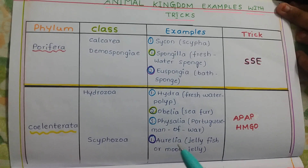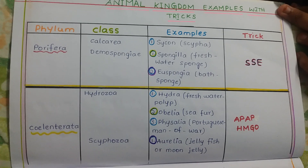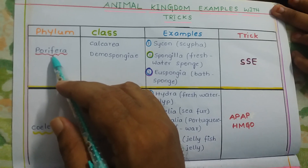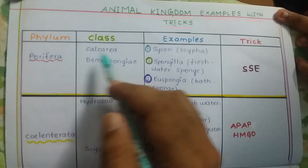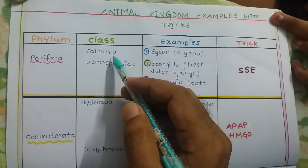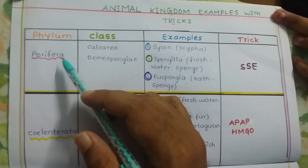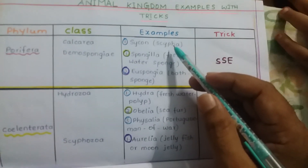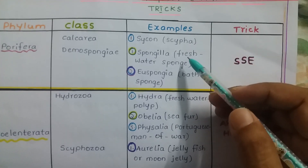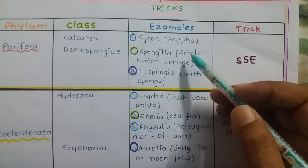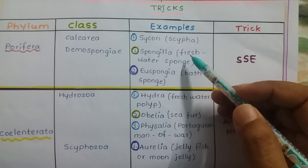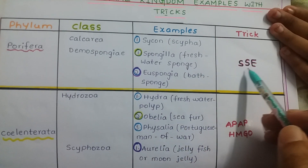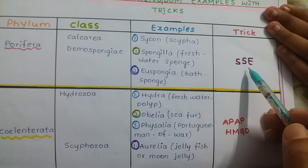Let us learn some of the tricks here. Let us start with the first phylum, Porifera. The examples are Sycon, Scypha, Spongilla (freshwater sponge), and Euspongia (bath sponge). Here the trick is SSC — S for Sycon, S for Spongilla, and E for Euspongia.